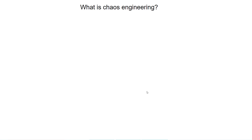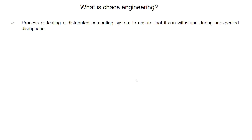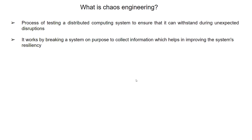Hi, my name is Nitin. In this first chapter we will discuss about what is chaos engineering. Chaos engineering is a process of testing a distributed computing system to ensure that it can withstand unexpected disruption.